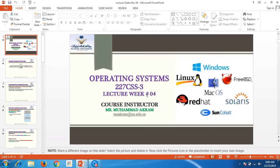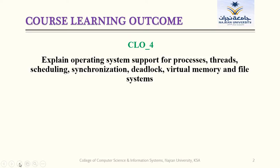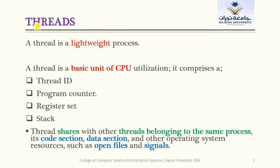That was lecture number four. Today we are going to start lecture number five — the first session. This lecture also belongs to course learning outcome four. This lecture is mainly about the thread. A thread is also a process, but it is a lightweight process. If you divide a process into small parts, those are called threads. One process may have many threads. We have two types of models which we will discuss one by one.